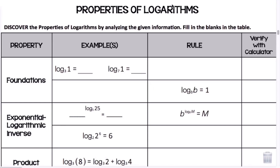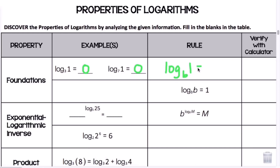We look at the first property of the foundations. If we put this in our calculator, thinking back to lesson 8.2 — 3 to what power will give me 1? We know that has to be 0, because anything to the 0 power gives us 1. Same thing for 7 to what power gives me 1 — of course it's 0. So we can make the rule: log base b of 1 equals 0.